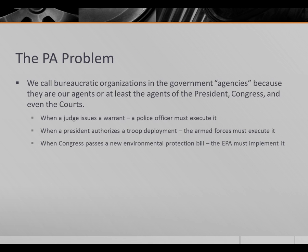We call bureaucratic organizations in the government agencies because they are our agents — or at least they're the agents of the president, Congress, and even the courts. So they're the agents of our agents. For example, when a judge issues a warrant, a police officer has to execute that warrant. When the president authorizes a troop deployment overseas, the armed forces must find a way to execute that order. And when Congress passes a new environmental protection bill, the EPA must find a way to implement that new law.